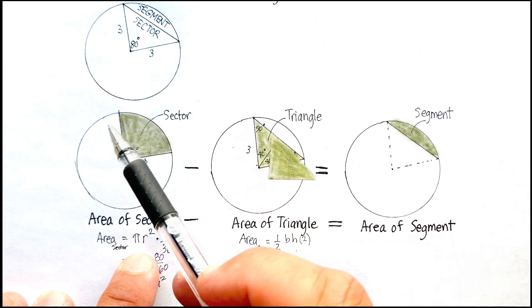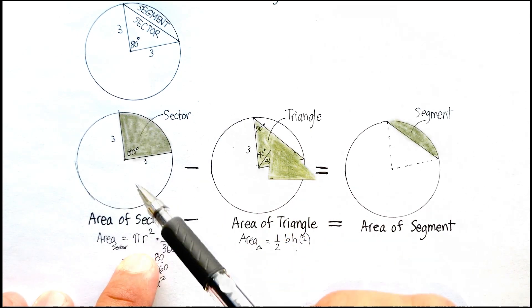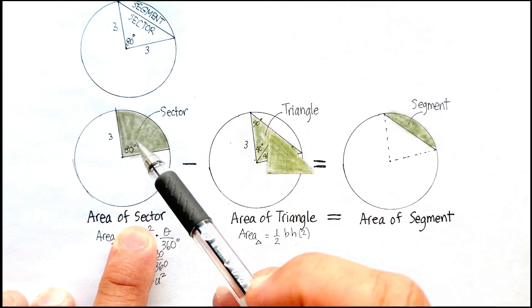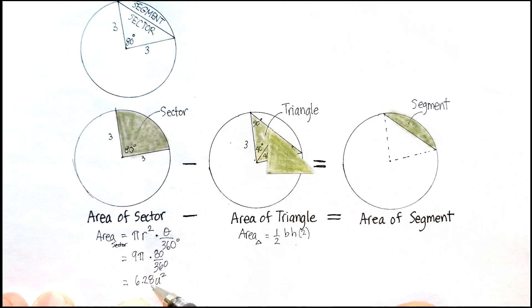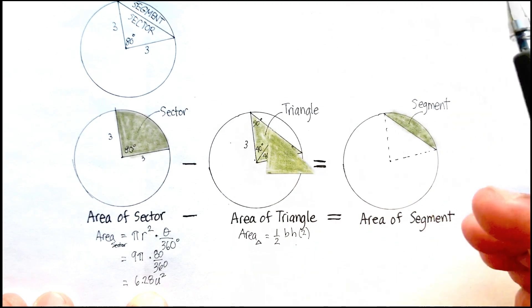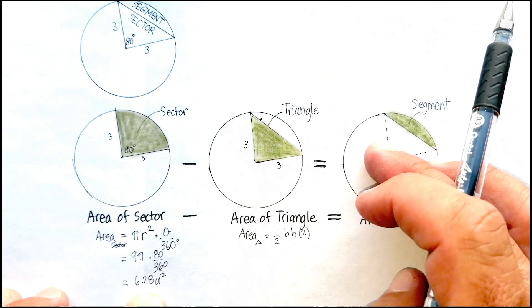So again, remember, just find the area of the total circle. Multiply it by the proportion that this would be, which is 80 over 360. Multiply your numbers, and you'll get 6.28 units squared, because remember, we're looking at an area. Okay, now let's go to the triangle.